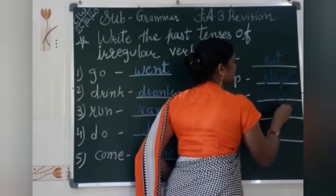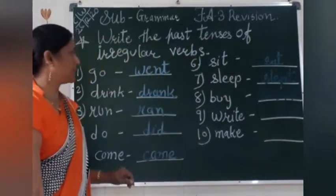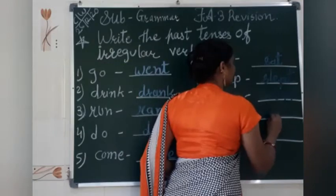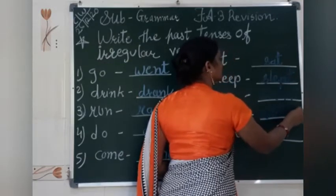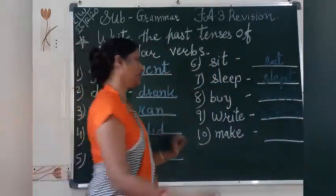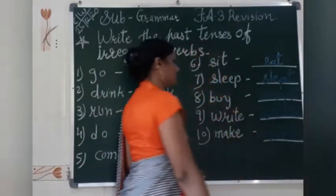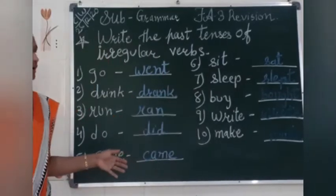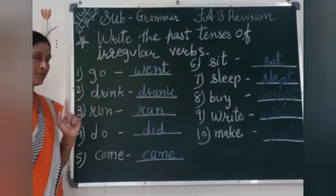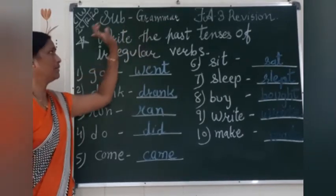Buy — past tense is 'bought', B-O-U-G-H-T. 'Write' — past tense is 'wrote', W-R-O-T-E. 'Make' — past tense is 'made', M-A-D-E. So these words are called irregular verbs. This exercise you have to write in your grammar notebook.